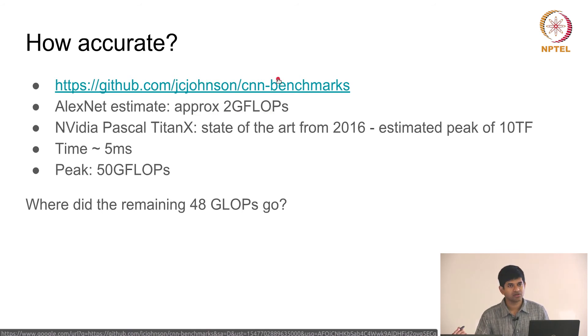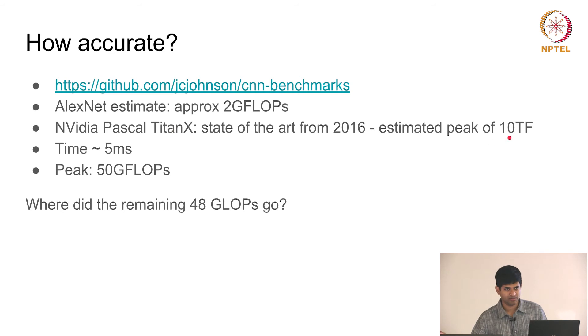There is one website where this person has basically gone and done benchmarking of networks. This is from 2016 and they estimated that the Nvidia Pascal Titan X, which is pretty much the top of the line as of that date, was capable of a peak performance of 10 teraflops. The time that he observed for running one instance of AlexNet, basically recognizing per image, was approximately around 5 milliseconds or so.